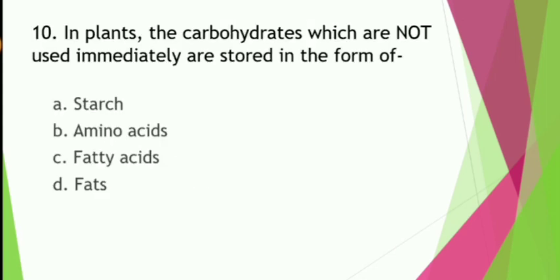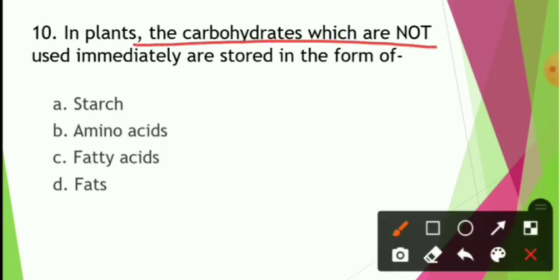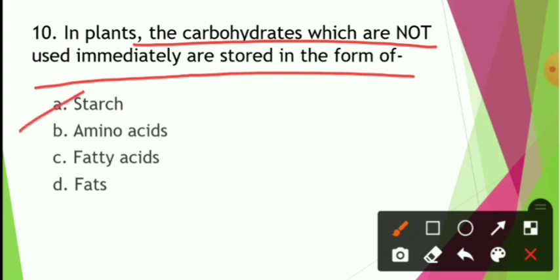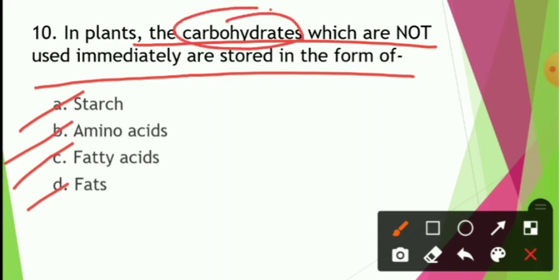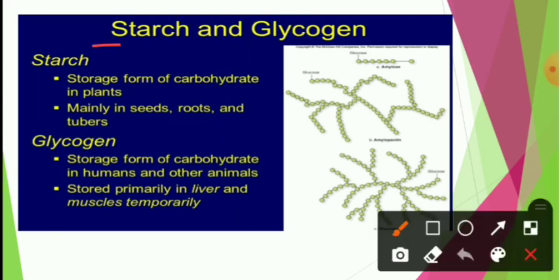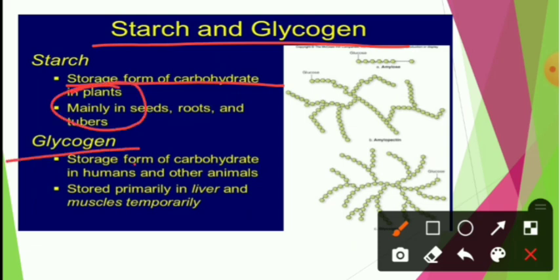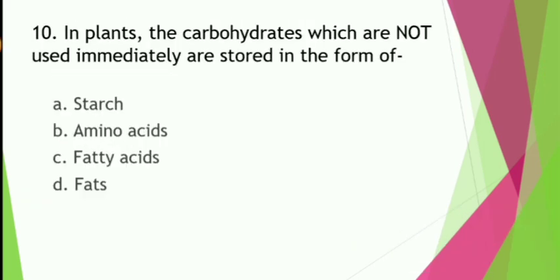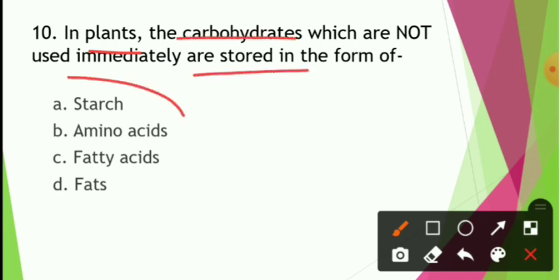In plants, carbohydrates which are not used immediately are stored in the form of starch, amino acid, fatty acid, or fats? Plants prepare their food as carbohydrates but don't store carbohydrates immediately — they store it in the form of starch. Starch is the storage form in plants, while glycogen is the storage form in humans and animals. The answer is starch.